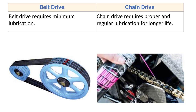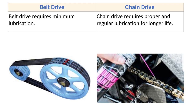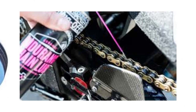Belt drive requires minimum lubrication — only occasional lubrication is needed. Too much lubrication is not desired as the belt may slip off. Chain drive, on the other hand, requires proper and regular lubrication for longer life. It does not need as much lubrication as gear drive, but regular lubrication is required and its cost should be considered when evaluating the economics of belt versus chain drive.